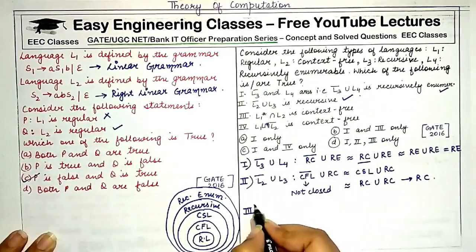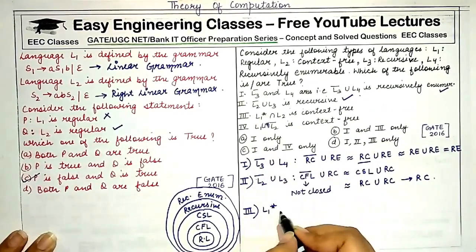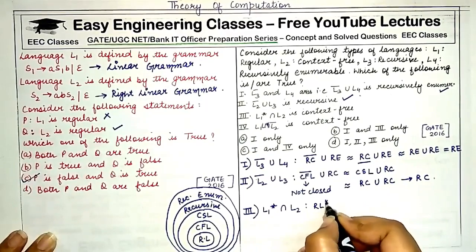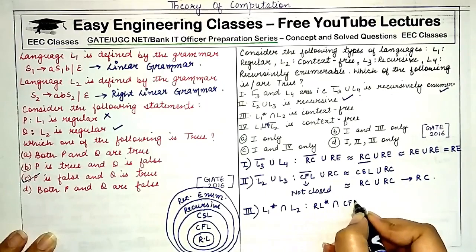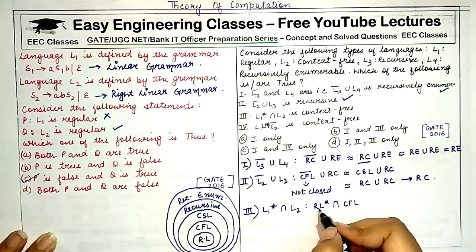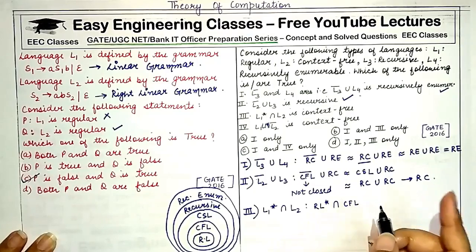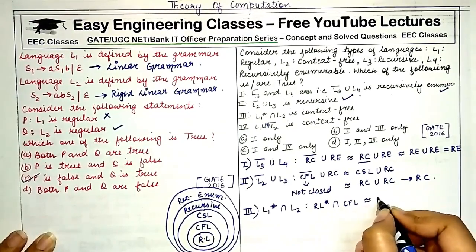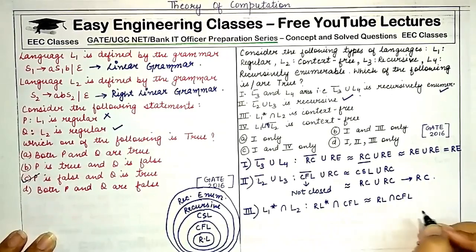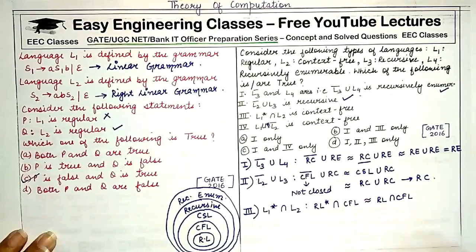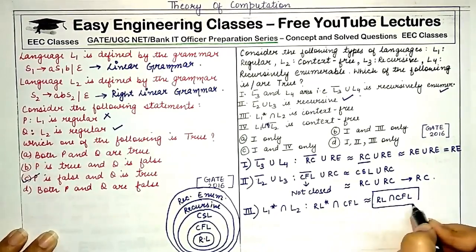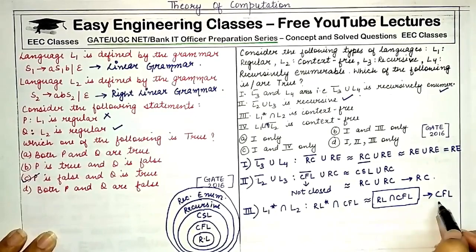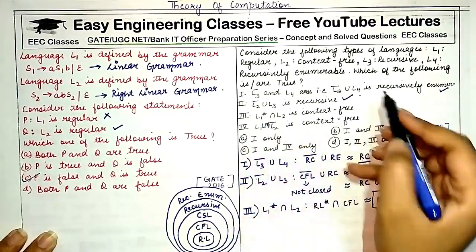Coming to the third statement: L1 star intersection with L2. L1 is a regular language, and regular languages are closed under Kleene star, so L1 star is also a regular language. L2 is a context-free language. There is a theorem that states the intersection of a regular language with a context-free language gives a context-free language. So the answer is context-free language, and the third statement is also correct.